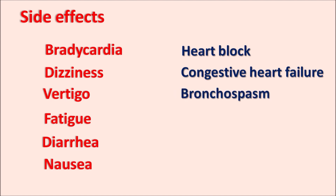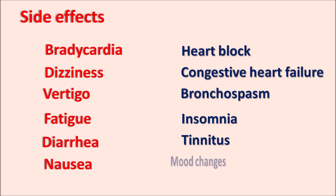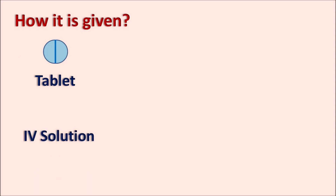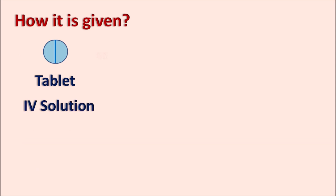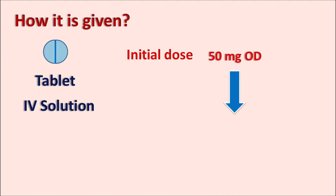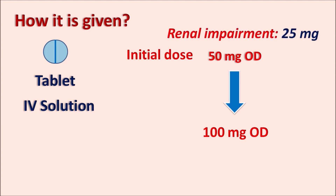Some bronchospasm can be observed at high dose, along with insomnia, tinnitus (a budging noise in the ears), and some mood changes in patients. How is it given? This drug is available as tablet as well as IV solution. The initial dose depends on the clinical conditions. Generally the dose is initiated at 50 mg once daily and can be increased up to 100 mg once daily. But in patients with renal impairment or other such conditions, the dose is reduced to 25 mg once daily.